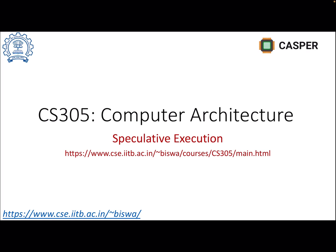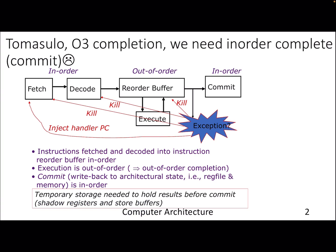In this lecture we will continue discussing dynamic scheduling, but now we'll bring in the reality of speculation in the form of branch predictors, handling exceptions, and the notion of in-order commit. In the last lecture we discussed Tomasulo organization, where we were providing out-of-order completion. We know that out-of-order completion will result in issues.